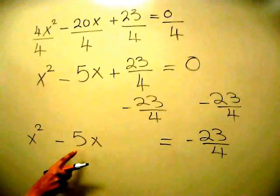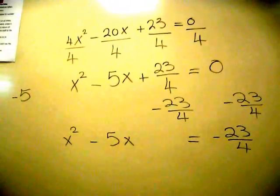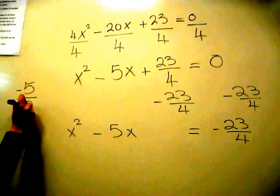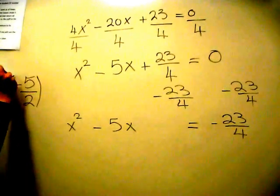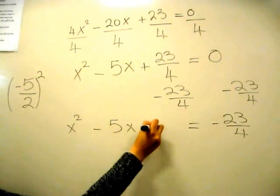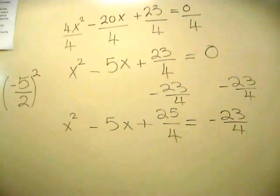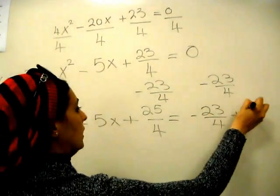Then we take the middle coefficient, which in this case is negative 5. We're going to divide that by 2 and then square it. That would get me positive 25 over 4. I'm going to add that to both sides.